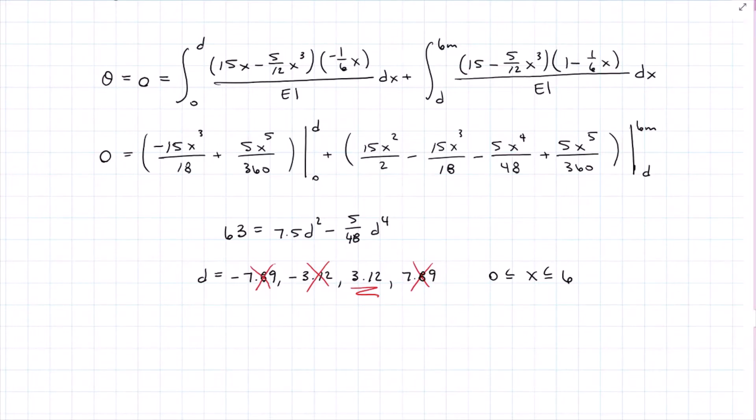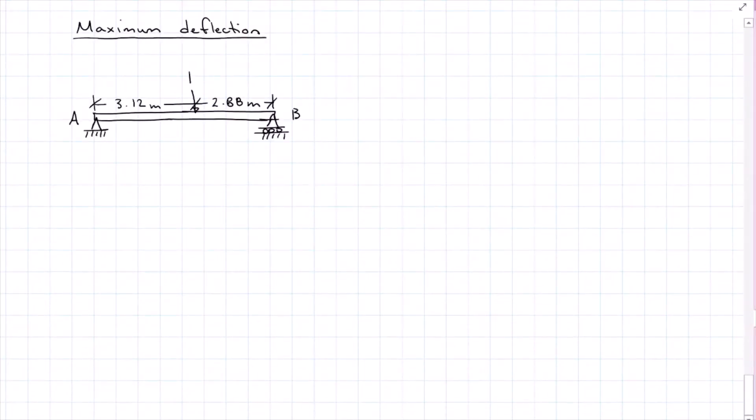So we can do a second virtual beam, and on this second virtual beam, I have my unit load of 1 that's acting straight down because I'm now looking for a deflection at that specific point that I found, 3.12 meters from A, and solving for my reactions, I find that AY is 0.48, and BY is 0.52, AX remains 0. I'm still going to need two sections, one before the load and one after the load to get my two virtual moment equations.